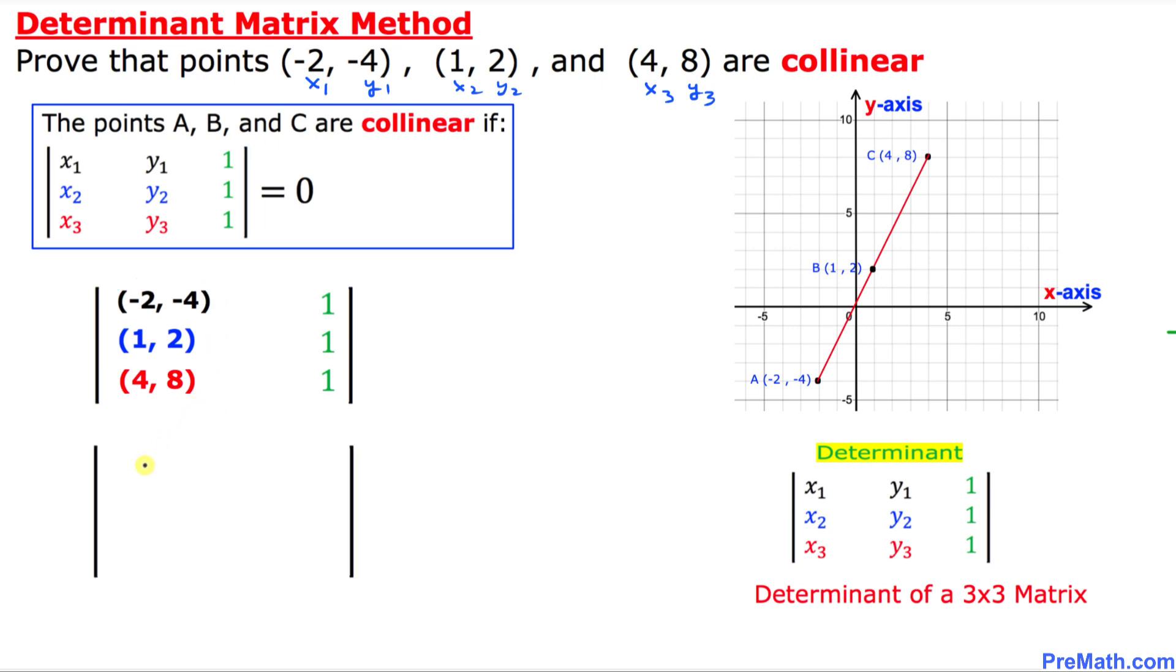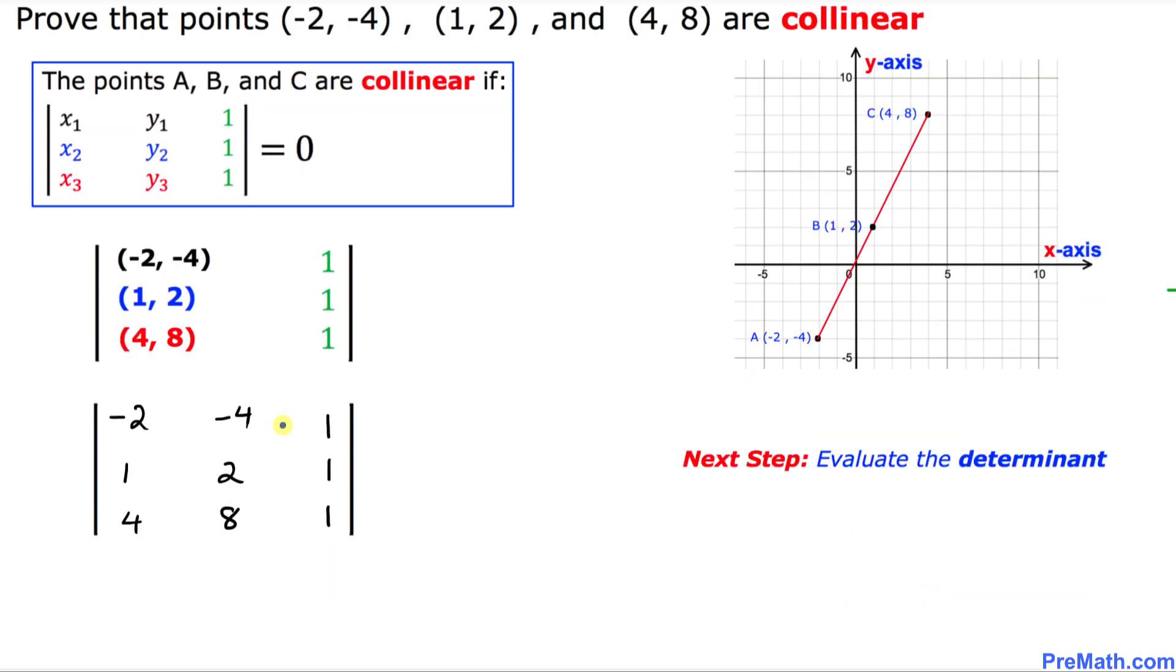And finally, I'm going to go ahead and fill out nicely these points. So I'm going to put down negative 2, negative 4, 1, 2, 4, 8, and this third column over here on the right-hand side has all entries ones. And now in our final step, we are going to find the value of this determinant.